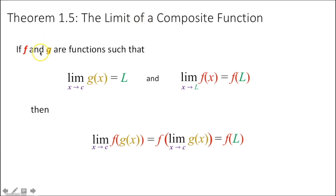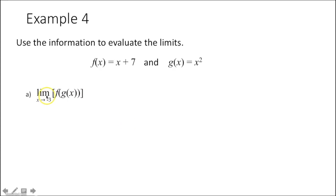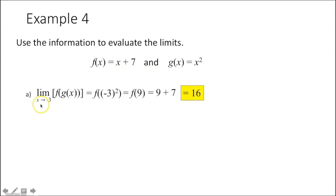Theorem 1.5, the limit of a composite function: if the limit as x approaches c of g(x) equals L, and the limit as x approaches L of f(x) equals f(L), then the limit as x approaches c of f(g(x)) equals f(L). What this means is: plug c into the innermost function, get a value, then plug that value into the outer function. For example, the limit as x approaches negative 3 of f(g(x)): plug negative 3 into g(x) to get negative 3 squared equals 9, then plug 9 into f(x) to get 9 + 7 = 16.